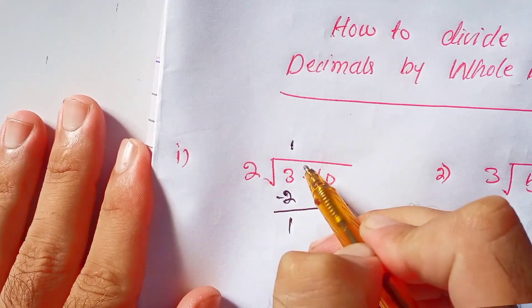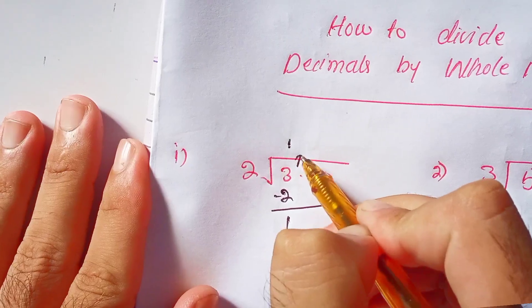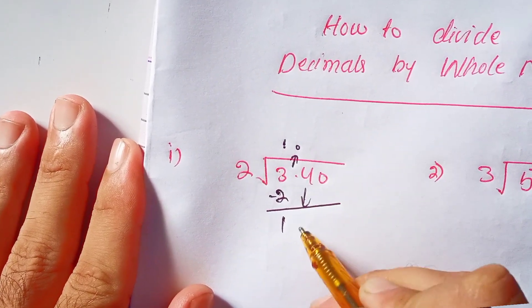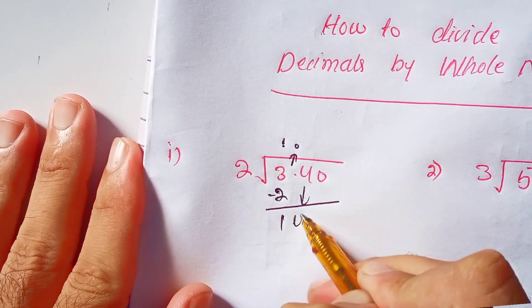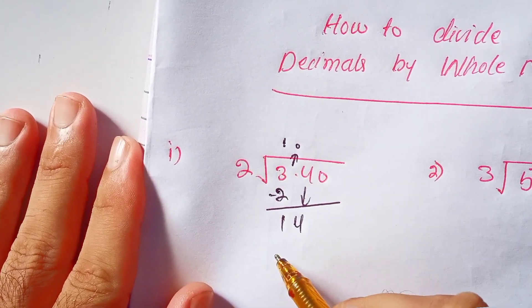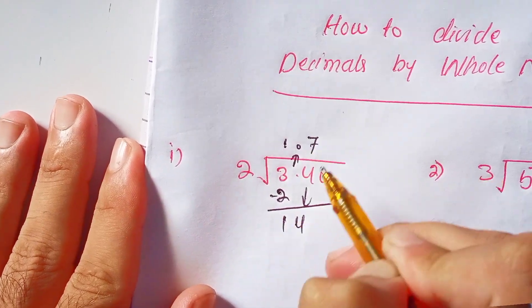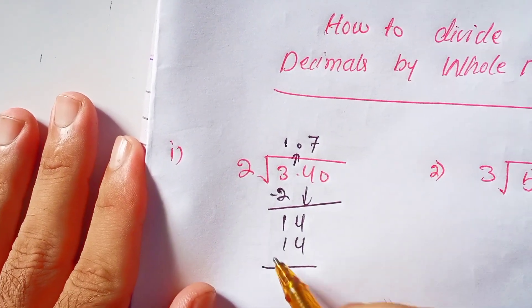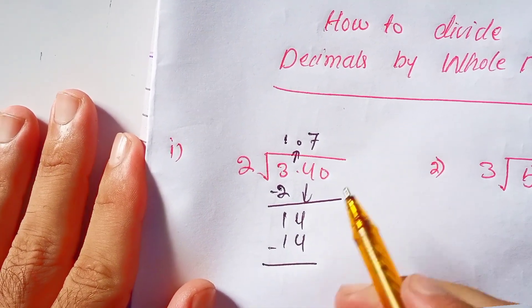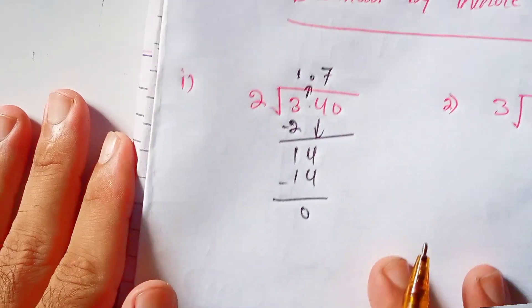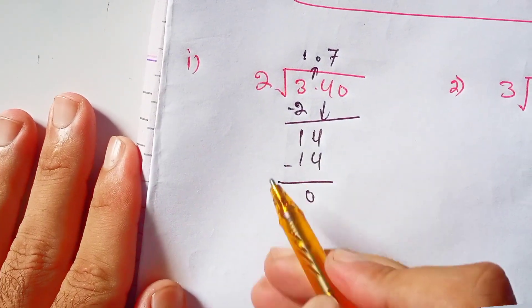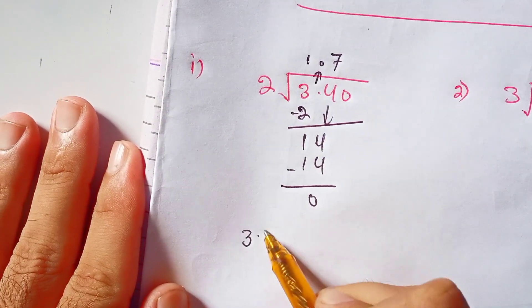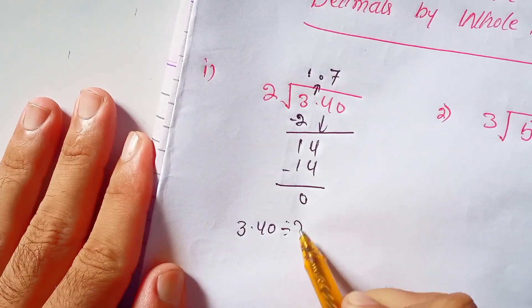Now place the decimal point in the quotient and bring down the 4 near 1 to make it 14. 2 times 7 is 14. Subtract 14 from 14, the remainder is 0. So we can say that 3.40 divided by 2 is equal to 1.7.